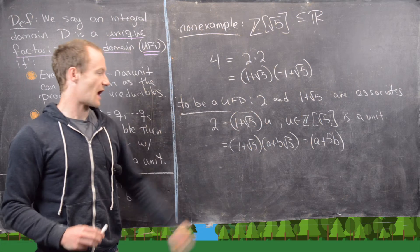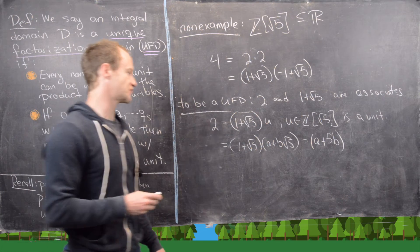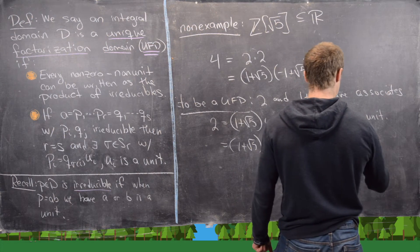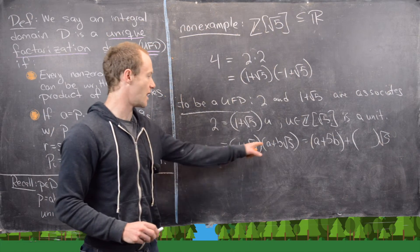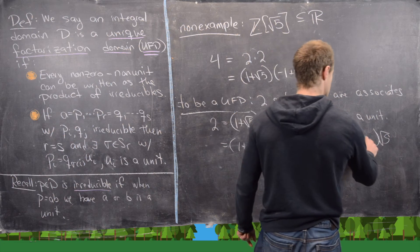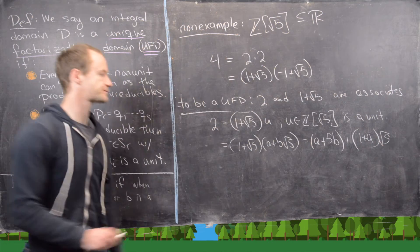Great. And then our root 5 coefficient will be, let's see. So our coefficient of root 5 will be 1 plus A. Like that. Okay.